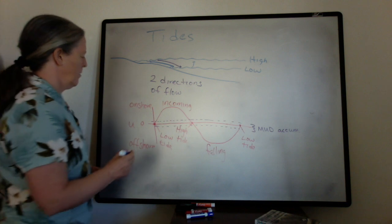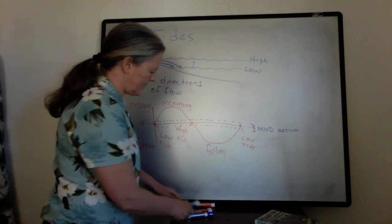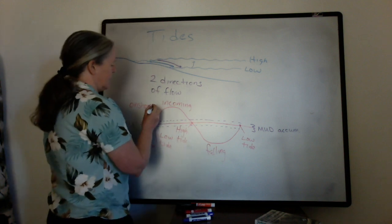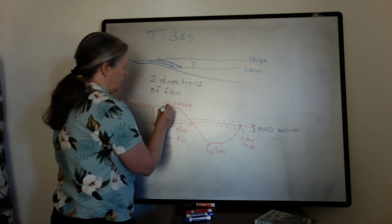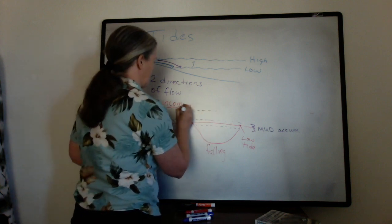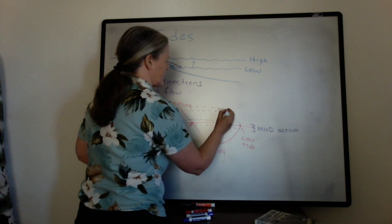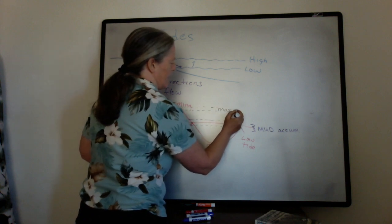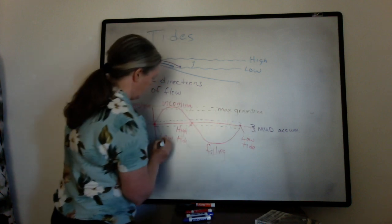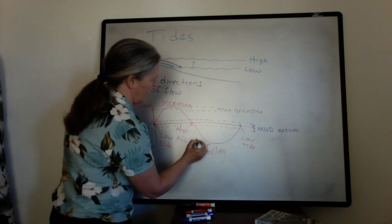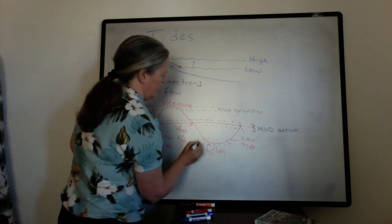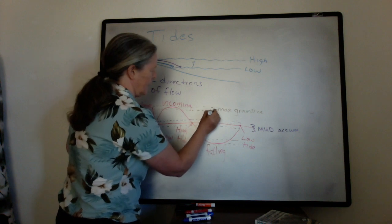Depending on how fast this flow is, we get much coarser grains deposited here in this zone right here. I'll just say maximum grain size gets transported. That may or may not be the same for the falling tide. Sometimes the flow speeds are a little bit different.